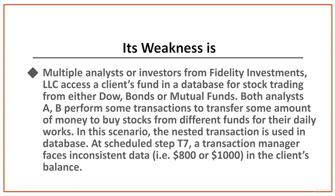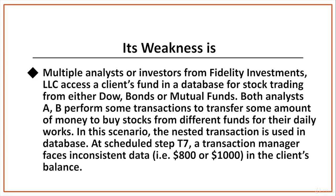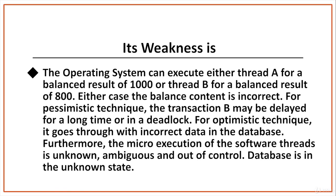Many users often encounter data interference issues in database management systems. In stock markets, a simple example addresses the inconsistent data issue. Multiple analysts or investors from Fidelity Investments LLC access a client's fund in a database for stock trading from either DAO bonds or mutual funds. Both analysts A and B perform some transactions to transfer some amount of money to buy stocks from different funds. Using nested transactions, at scheduled step T7, a transaction manager faces inconsistent data — either $800 or $1000 in the client's balance. The operating system can execute either thread A for a balance of $1000 or thread B for a balance of $800; either case, the balance content is incorrect.